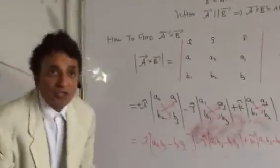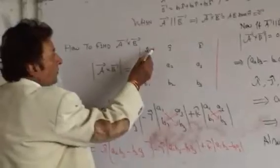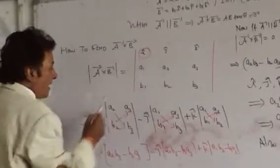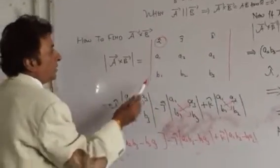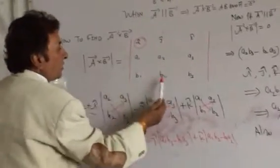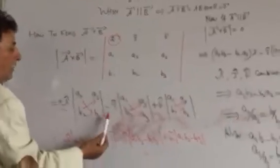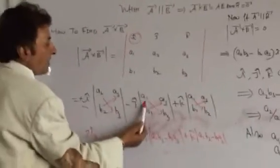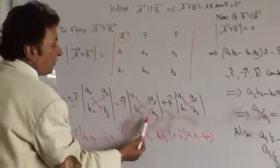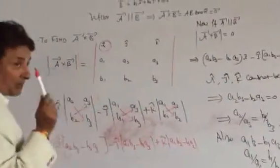Now, how to solve this determinant — just put i cap here, then you will write a2, a3, b2, b3; minus j cap: a1, a3, b1, b3; plus k cap: a1, a2, b1, b2.